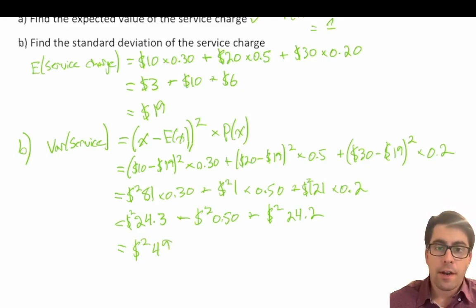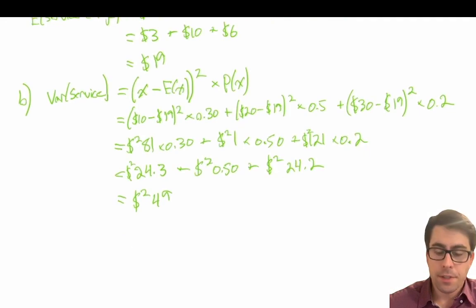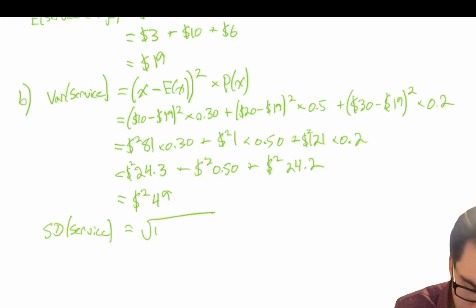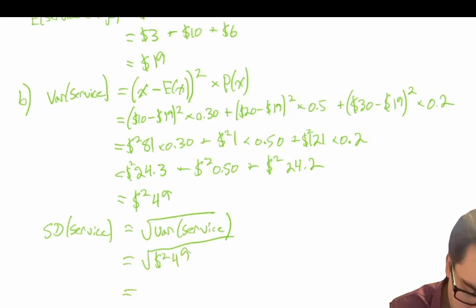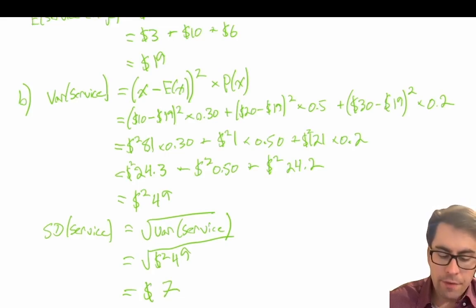A 'squared dollar' is not a meaningful unit, which is why standard deviation is the more commonly used metric. The standard deviation of the service charge equals the square root of the variance, which is the square root of $49 squared dollars. Taking the square root of a squared dollar gives us dollars, and the square root of 49 is 7. So the standard deviation is $7. Just like that, we've calculated the expected value, the variance, and the standard deviation.